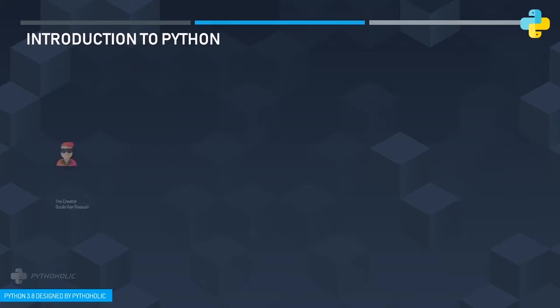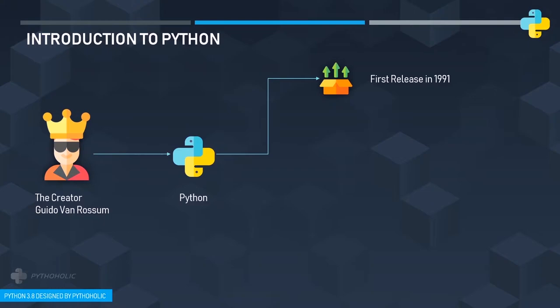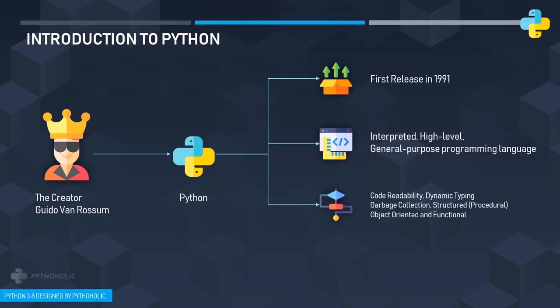This all started with the creator of Python, Guido van Rossum, when he decided to create Python as a project. It was a successor of the ABC language and was released in 1991. Python is termed a high-level language and a general-purpose language, meaning it's not constrained to a specific purpose — it can be used across multiple widespread application domains. High-level languages are very close to human-readable form with easy, intuitive syntax.